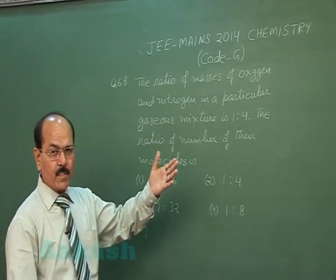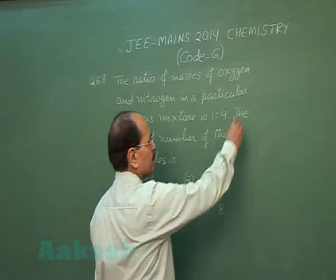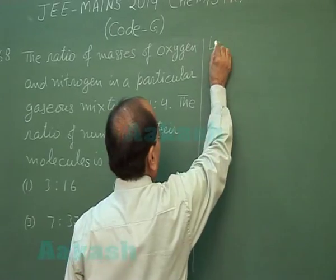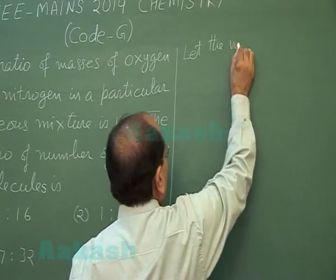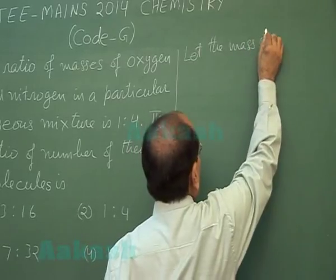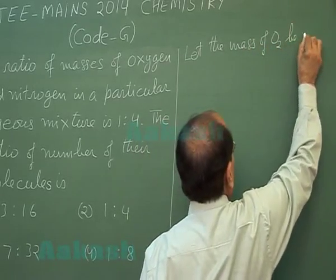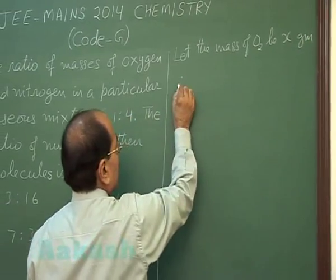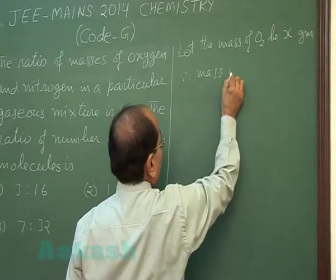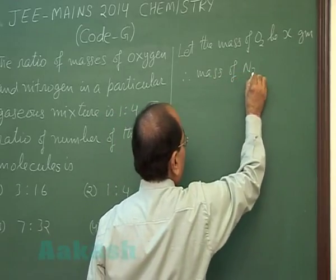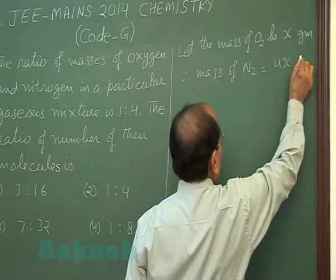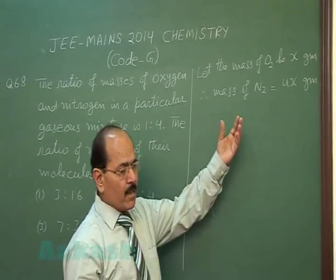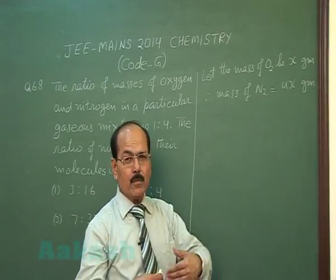Suppose the mass of oxygen in the given gaseous mixture be x. Let the mass of oxygen be x gram. Therefore, mass of nitrogen is equal to 4x gram. We will convert the masses of these gases into their moles.